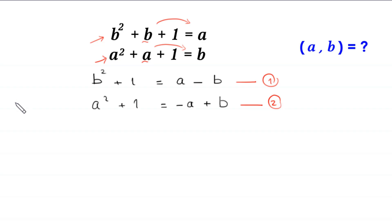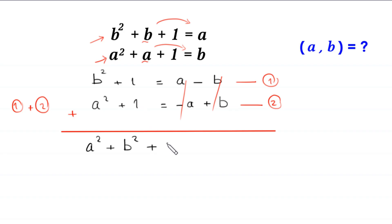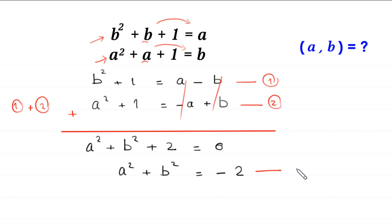Now we add equation 1 and equation 2. The negative b and positive b cancel, and the positive a and negative a cancel. This gives a squared plus b squared plus 2 is equal to 0. Moving the 2 to the right hand side: a squared plus b squared is equal to negative 2. Let's call this equation number 3.